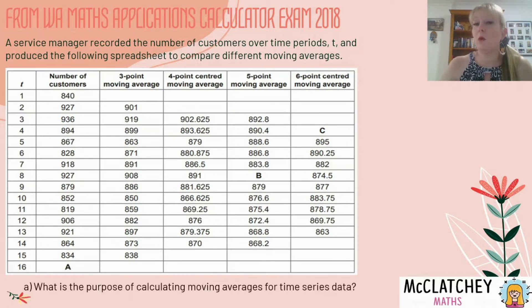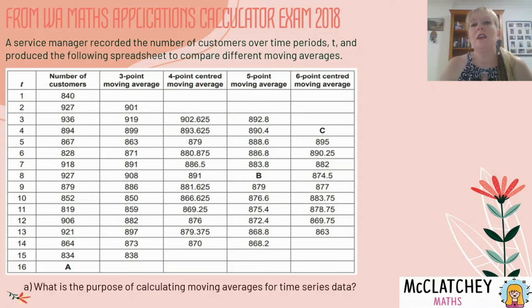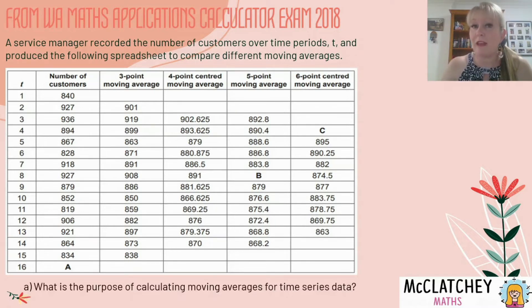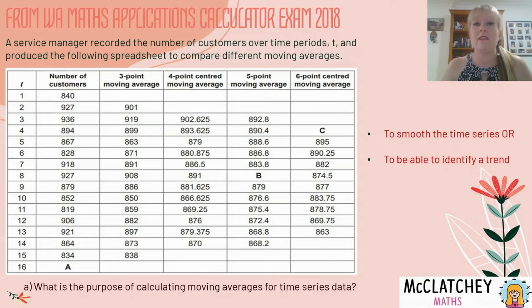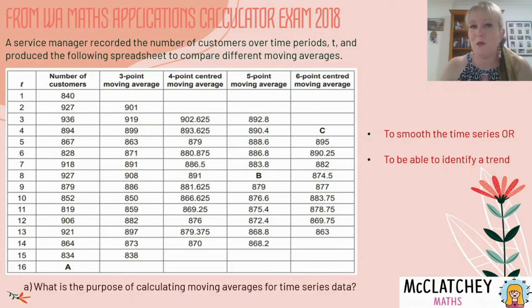The first part asks us: what's the purpose of calculating a moving average for time series data? You need to be able to give a short brief explanation about why we do this in the first place. The Western Australia solution was to either smooth the time series or to identify a trend. You could explain how the smoothing process takes out the impact of irregular fluctuations and helps you identify overall trends over a longer period of time.